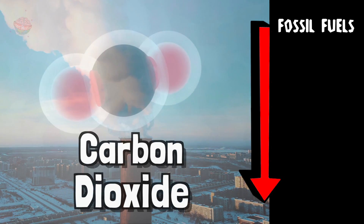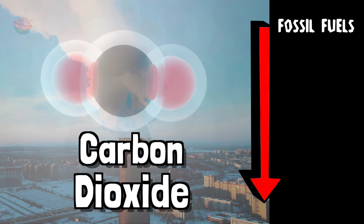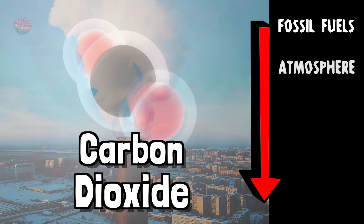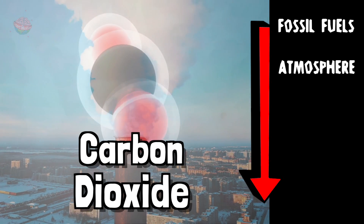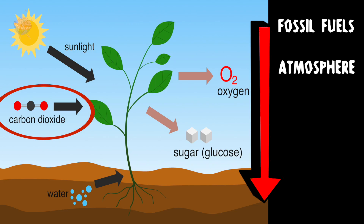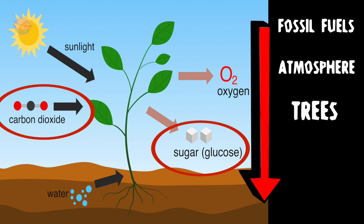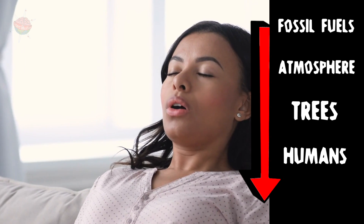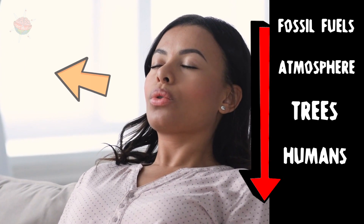Fossil fuels: when humans burn fossil fuels, carbon dioxide is released into the atmosphere. Trees use carbon dioxide to make sugar for energy.